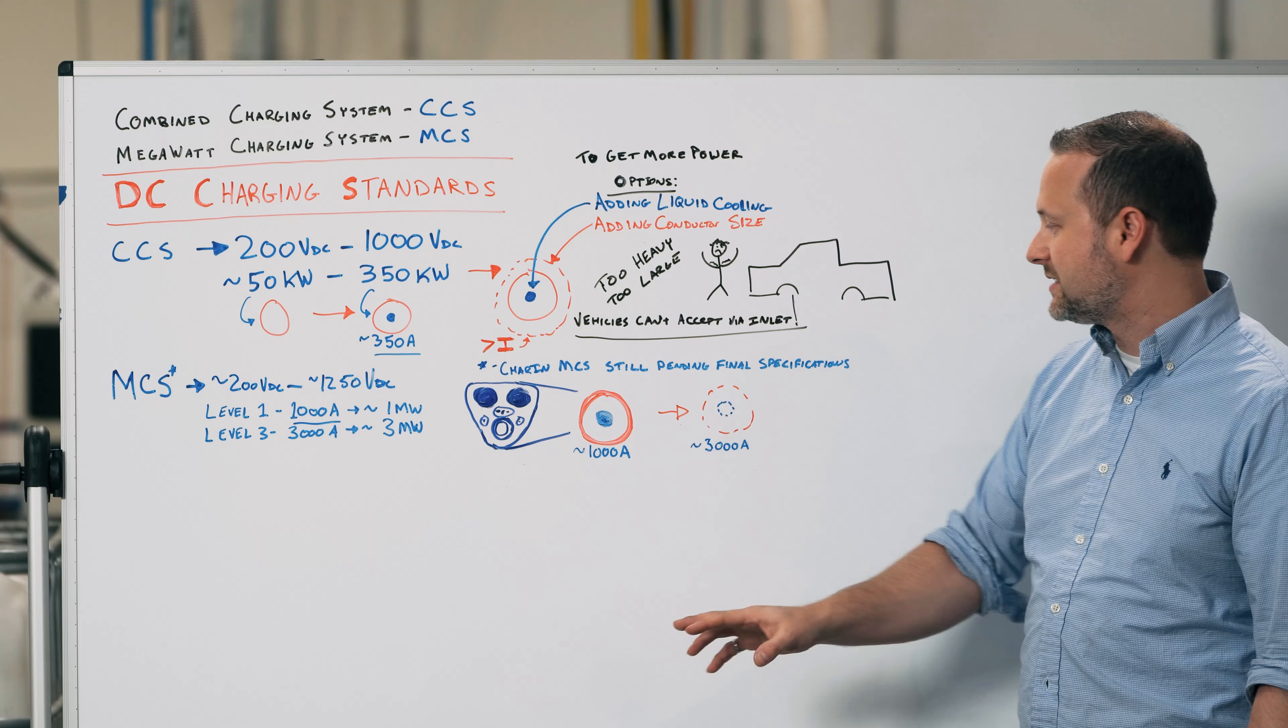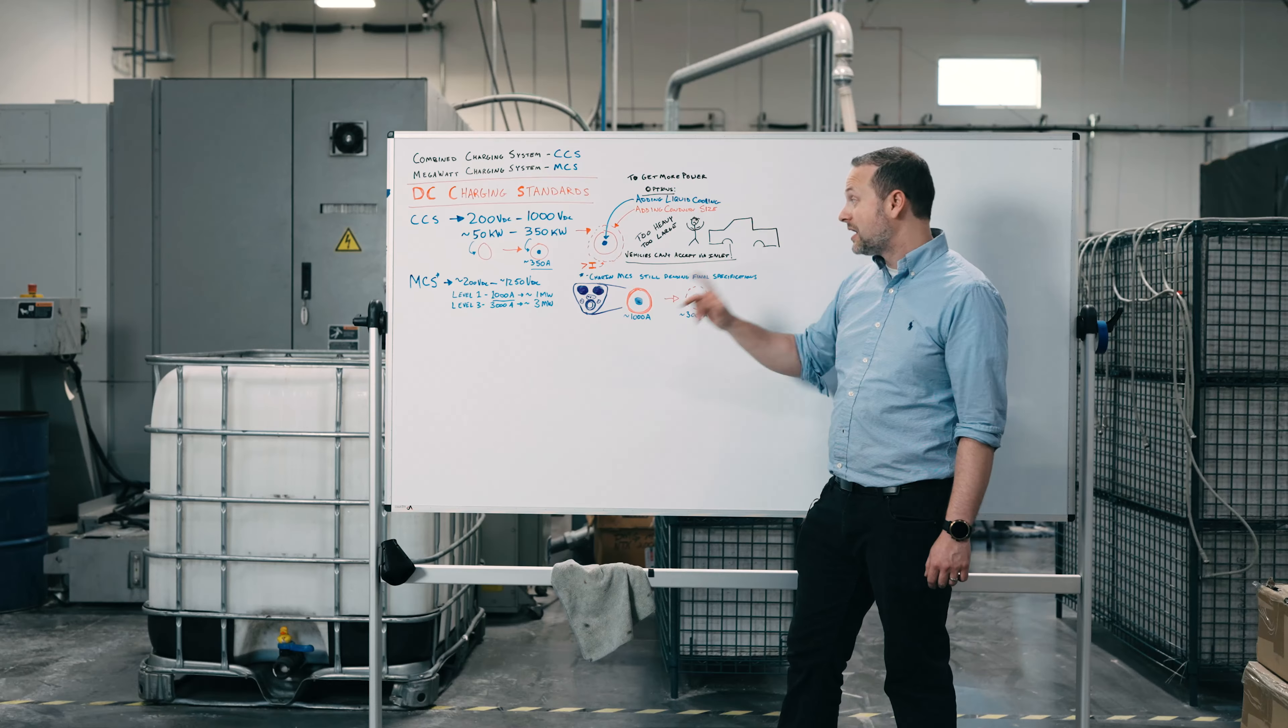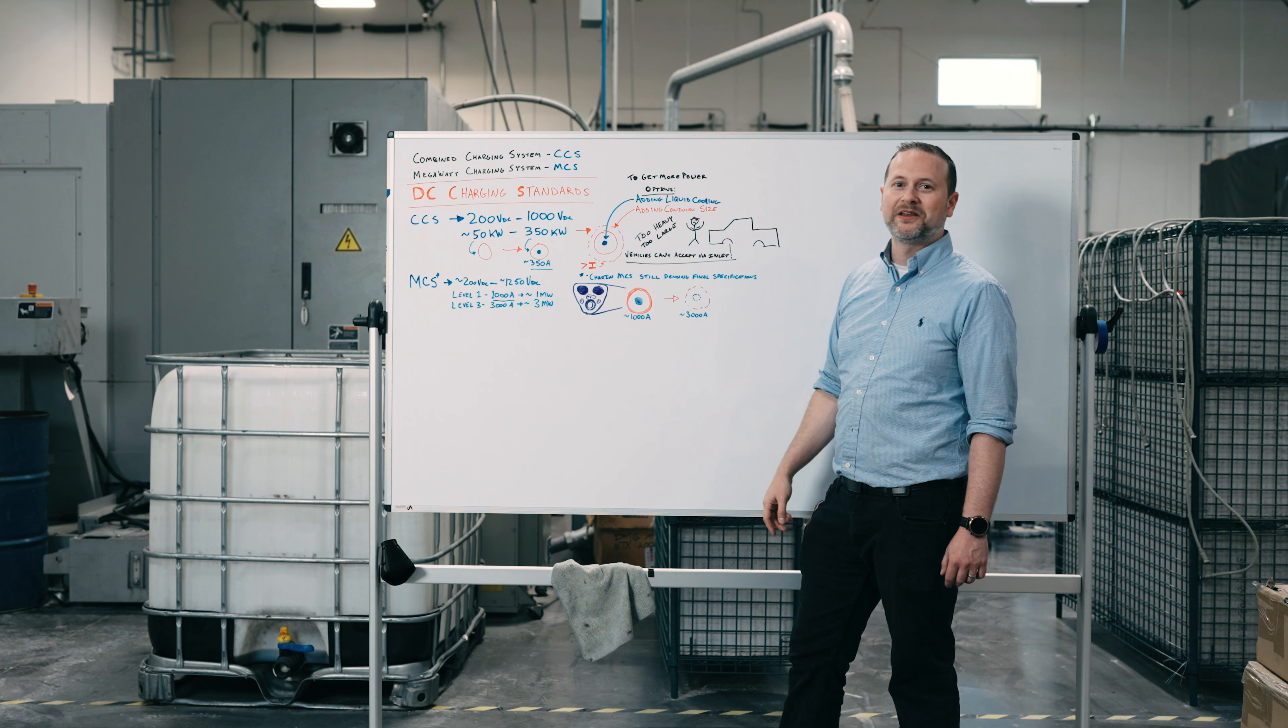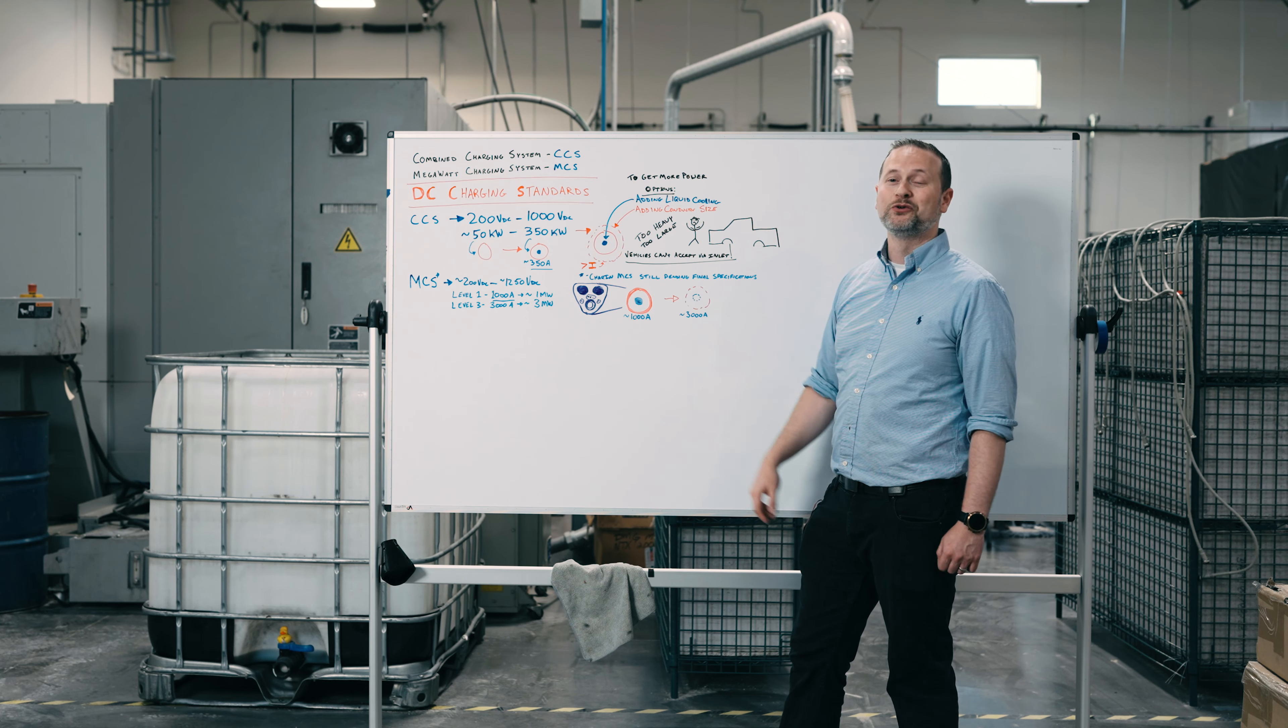But the conductors are roughly the same size for us to achieve that 1,000 amps. Now, the question is, what are we going to see when it comes to 3,000 amps in the conductor? Stay tuned for more.